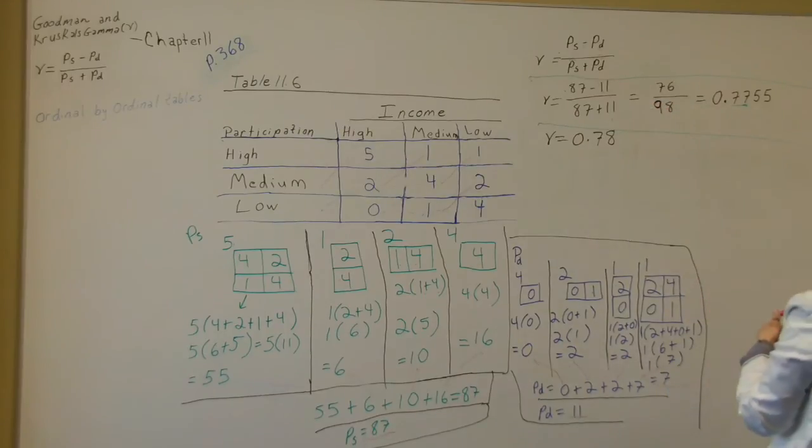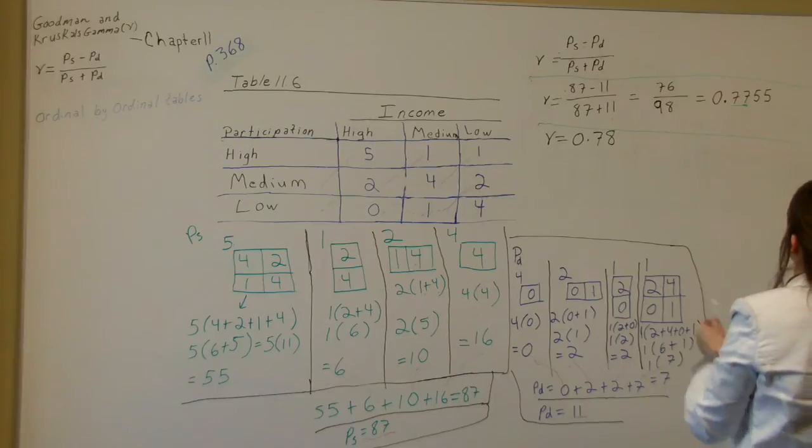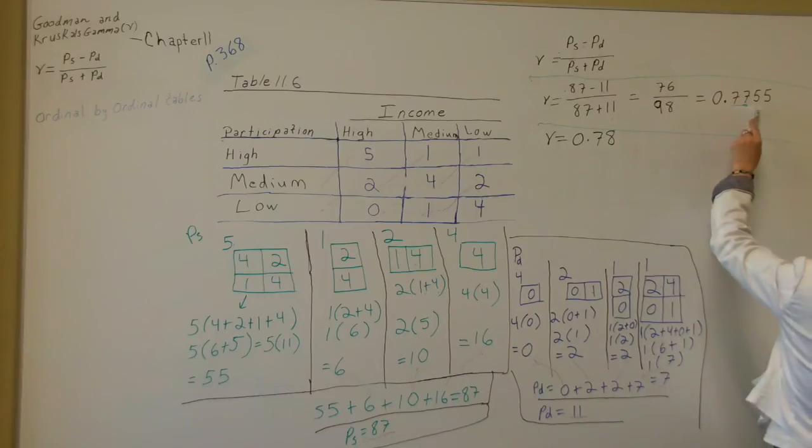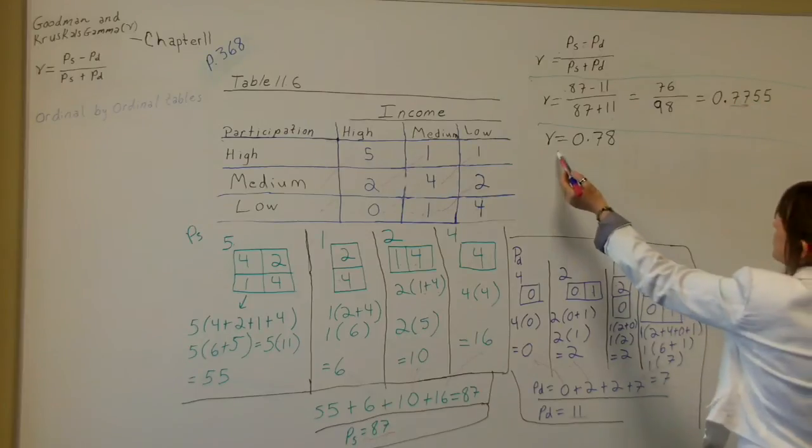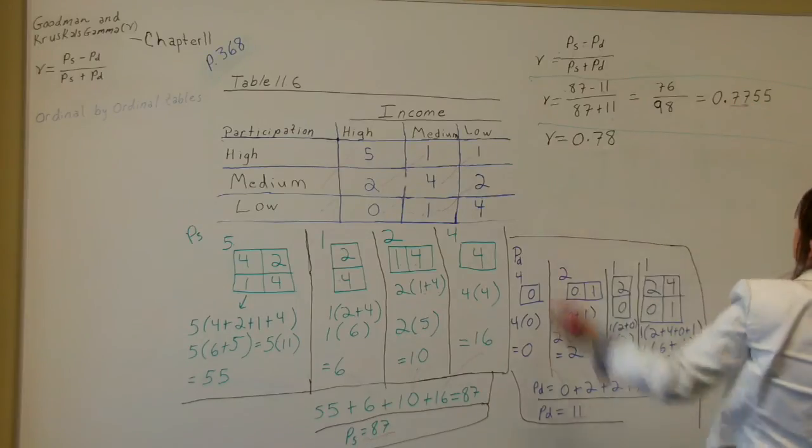So 87 minus 11 equals 76 over 87 plus 11 equals 98. And 76 divided by 98 equals 0.7755. What we're going to do is round this up to the second number, which is the hundreds place. So your gamma equals 0.78.